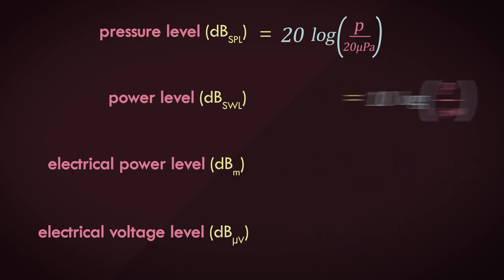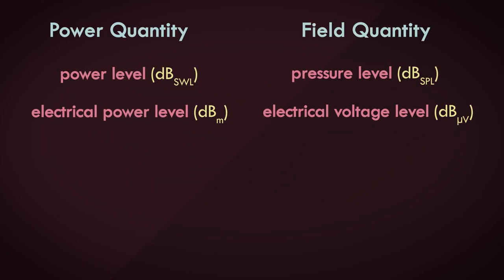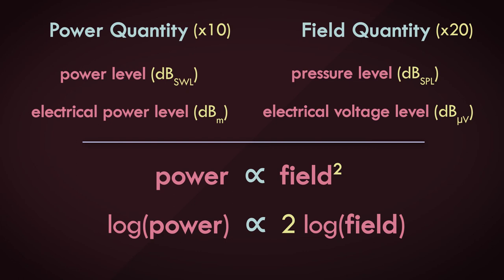Power quantities always have a multiplier of 10, and field quantities always have a multiplier of 20. That's because in the real world, power quantities are directly proportional to the square of the field quantities. So sound power is directly proportional to the square of the pressure, and electrical power is directly proportional to the square of the voltage or the square of the current, and the log of the squared quantity is just 2 times the log of the quantity. Make sense?